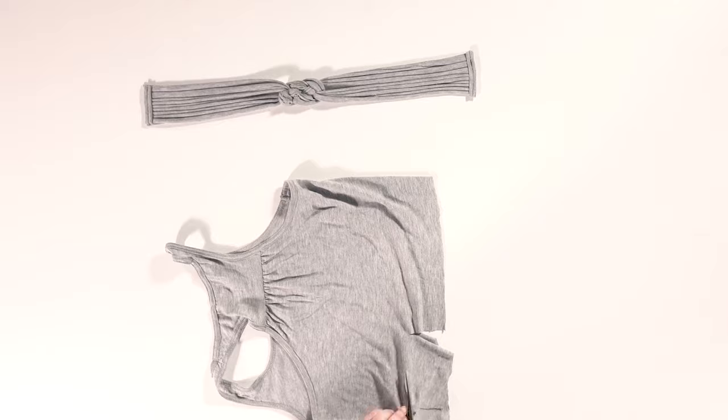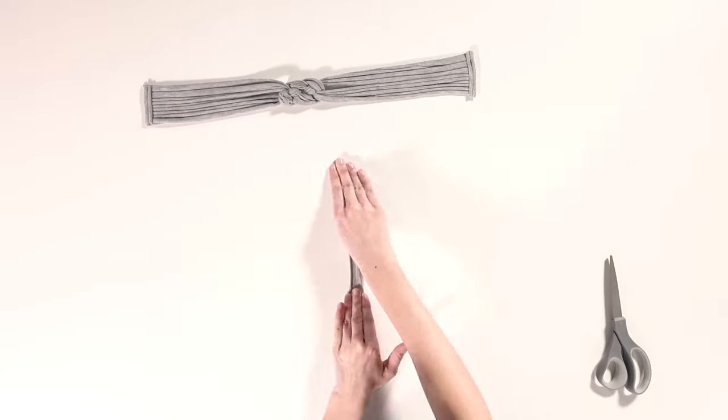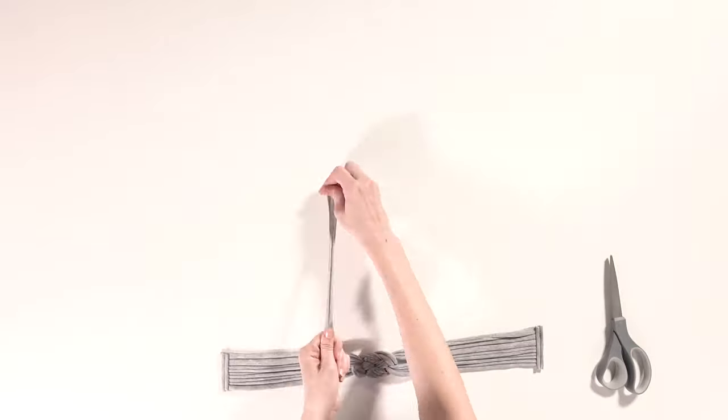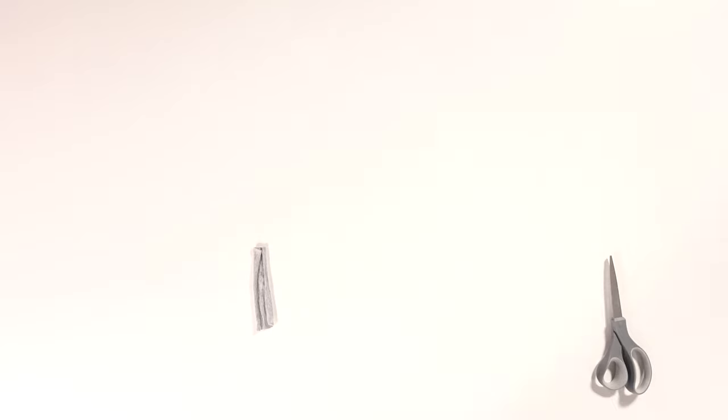Now take a square piece of scrap fabric, about 4 inches by 3 inches. Give it a tug to stretch it out, then place it with the edges folded underneath the ends of your headband straps.